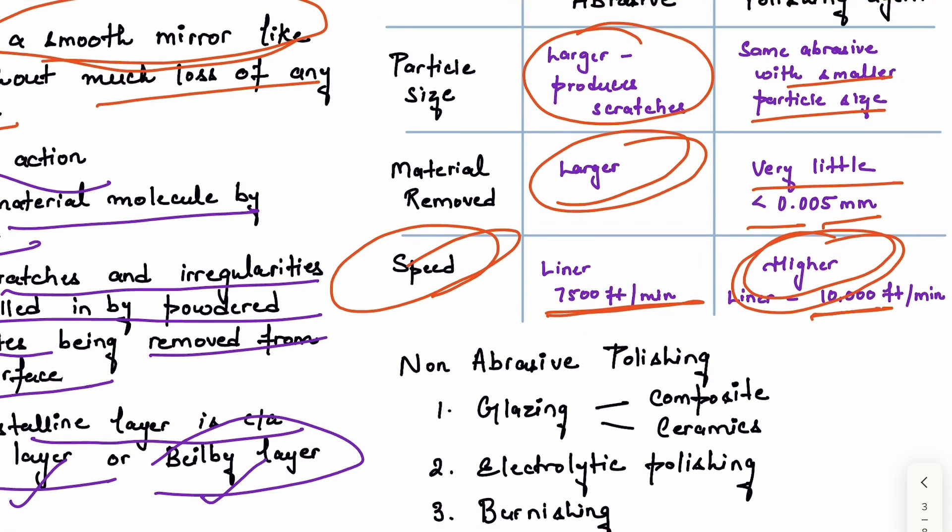Imagine if we have this structure with some elevations and depressions - an irregular structure. To give it a smooth, mirror-like finish, we can cover all of this, and now the surface will be very smooth. This is called non-abrasive polishing where we're not removing anything, just putting a coat on it. For this, we can do glazing using composite or ceramics, electrolytic polishing by depositing material on the surface, or we can do burnishing.